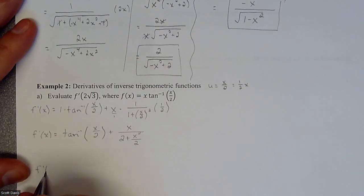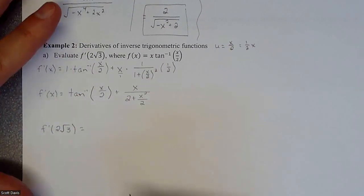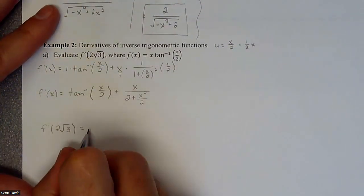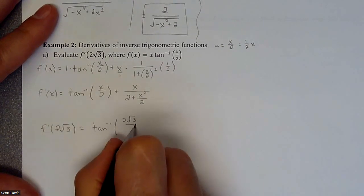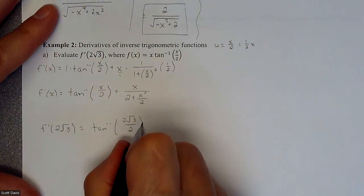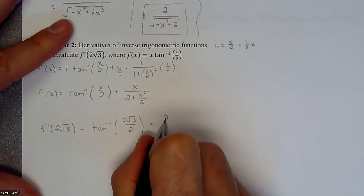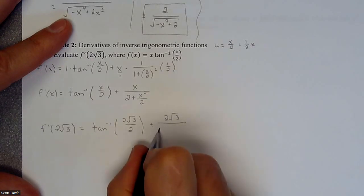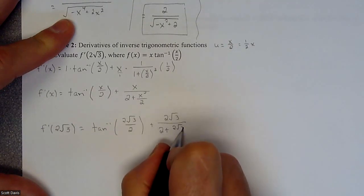So for us to find our slope at this two root three coordinate, then we are going to now plug that value in, and let's see what we get out of this. So inverse tangent. And then we're going to have a two root three over two, because we're taking our x, we're plugging in the two root three divided by two. So I'm going to do some trig on that one.